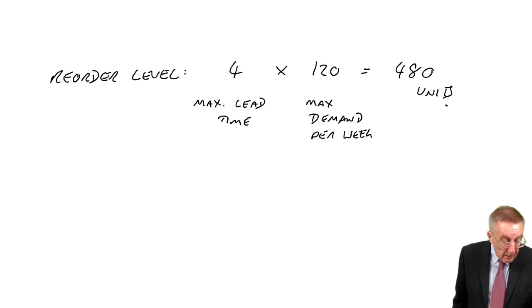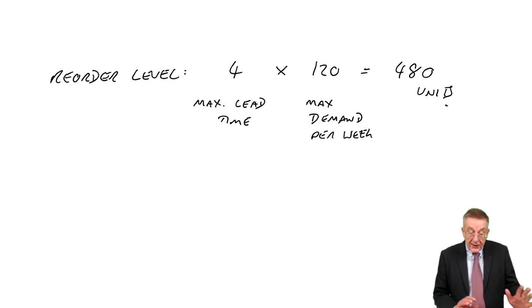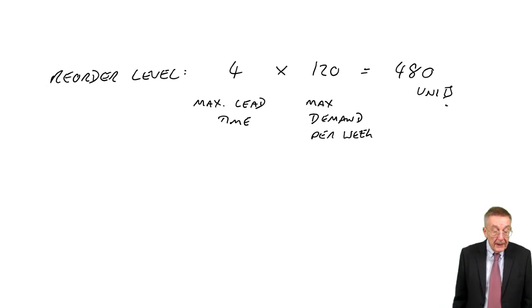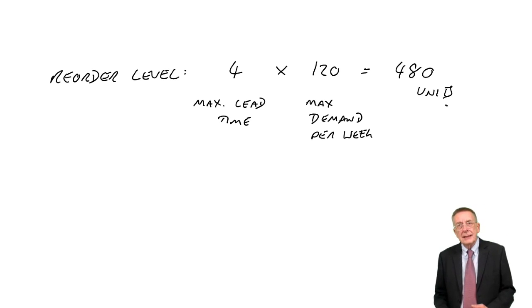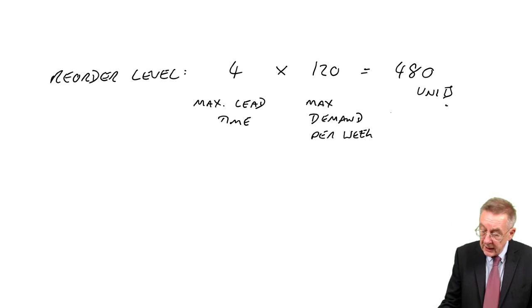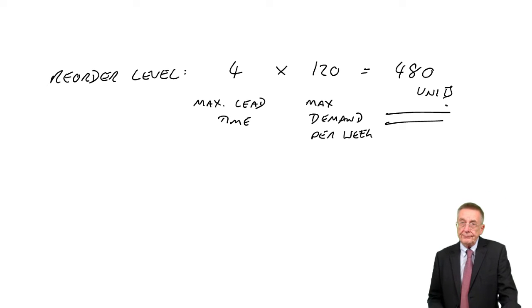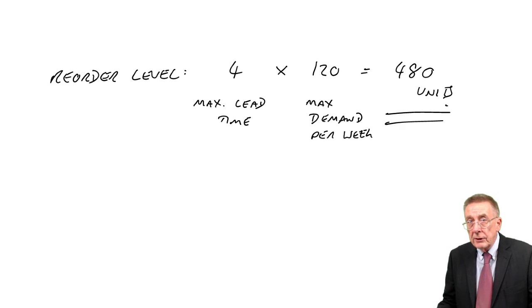Example eight, demand from customers is uncertain, it's between 70 and 120 a week. The lead time's uncertain is between three and four weeks. And we reorder, our order quantity, we order a thousand each time. And it says, what's the maximum inventory level going to be? And we already know our reorder level is 480. I said a minute ago, there are going to be plenty of times that we don't need all 480. And that we've still got some left when the new order arrives.